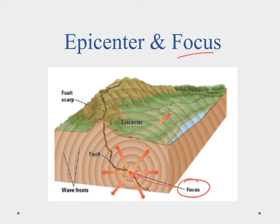Directly above the focus on the surface of the planet is where we find the epicenter. The epicenter is what we're more concerned with because that's where we would look for the strongest amounts of damage — it's the place on the surface closest to the focus, and since we live on the surface that's what we're concerned about. But remember, the focus is where it actually happens; the epicenter is the point on the surface right above it.